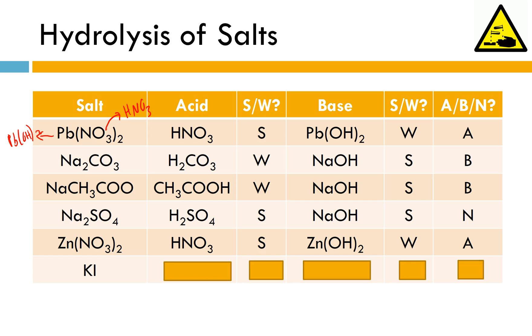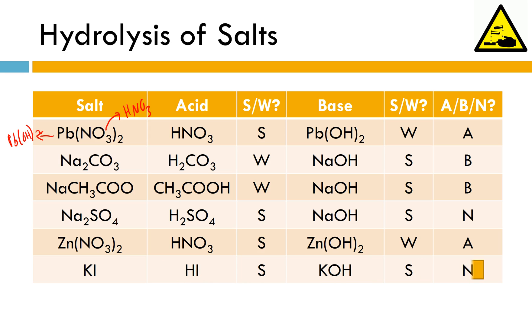Last but not least, we have hydroiodic acid — it's one of our seven strong acids — and potassium hydroxide, one of our seven strong bases. So we end up with a neutral salt.